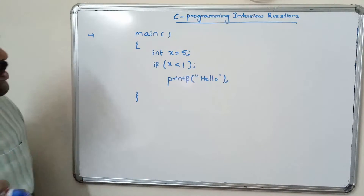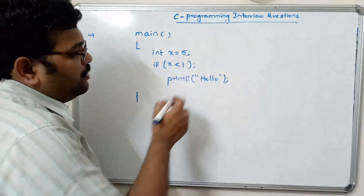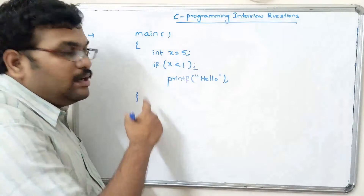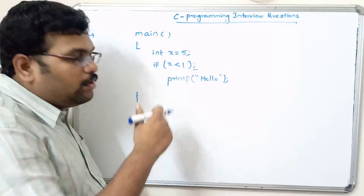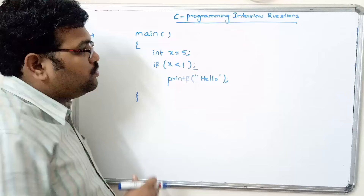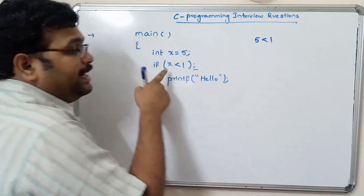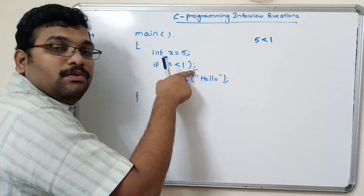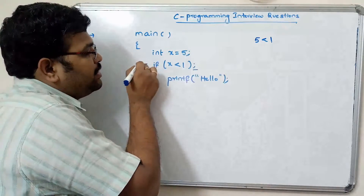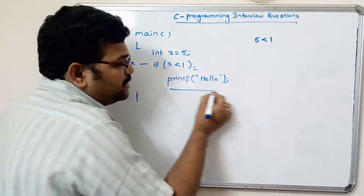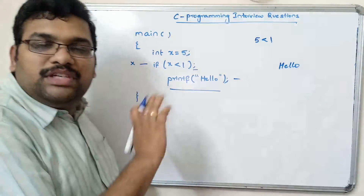First question: if x equals 5, if x less than 1, print hello. If you observe here, we have a semicolon after the conditional statement, so execution ends at that statement. The condition 5 less than 1 is false, but because of the semicolon the if statement completes its execution on that line itself. So automatically the next line will be executed and it will print 'hello'. We have to observe the semicolon for iterative and conditional statements.